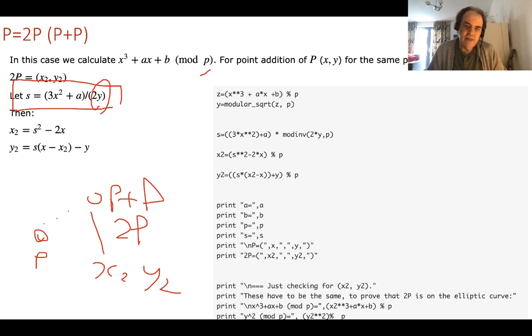I'll show you that in a minute. In the normal mathematical way, we find the inverse of that 2y value and then multiply it to this value here. Everything is done with the mod of p. We can then calculate the x value here and then the y value, which is equal to this here. So there are the equations that we have.